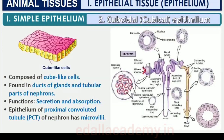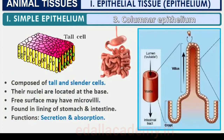The cuboidal epithelium is composed of a single layer of cube-like cells, commonly found in ducts of glands and tubular parts of nephrons in kidneys, with main functions of secretion and absorption. The epithelium of the proximal convoluted tubule (PCT) of the nephron in the kidney has microvilli. The columnar epithelium is composed of a single layer of tall and slender cells with nuclei located at the base, and free surface may have microvilli.